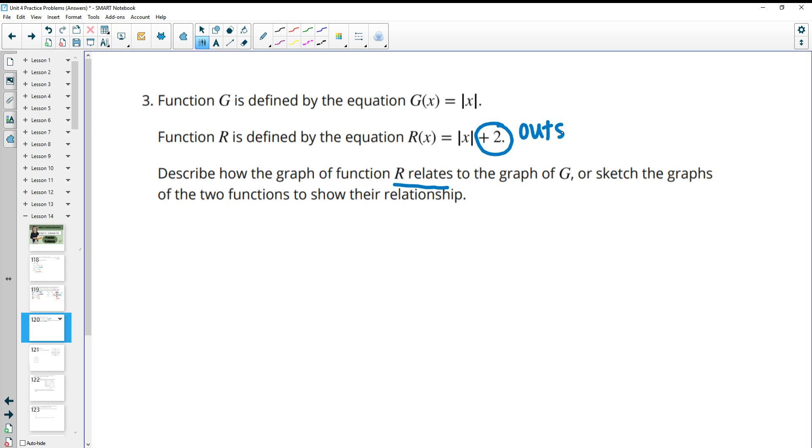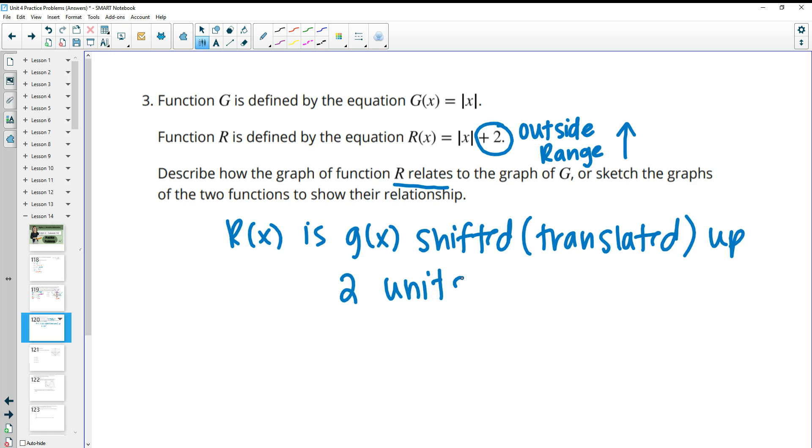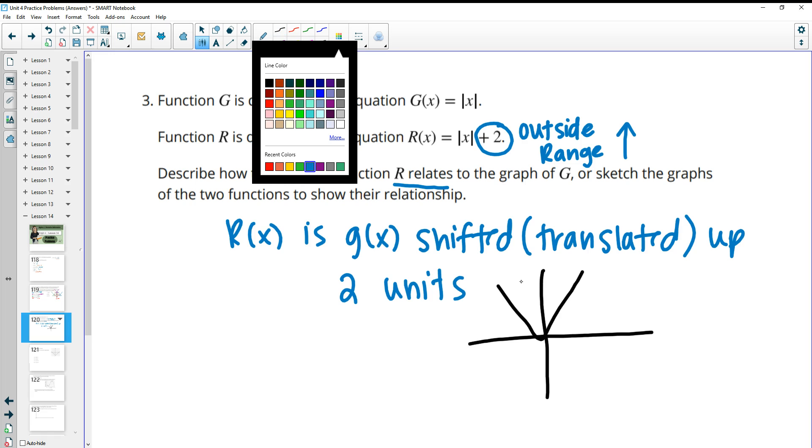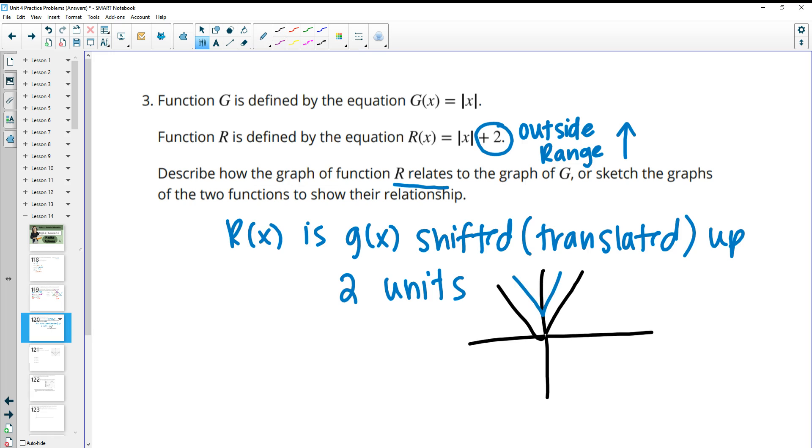And again, that's on the outside. So it's impacting the range of this function, meaning that it's moving it up. So r of x is g of x shifted or translated is another word to use, up 2 units. So if we had g of x here, r of x would just be this graph, but shifted up 2 units.